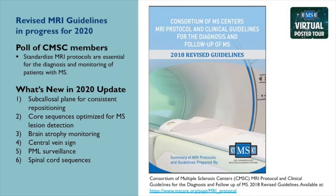Prior to this update of the guidelines, CMSC members were polled for their input. We got some really good suggestions. One was the interest around brain atrophy measurements — there's growing interest in wanting more quantitative information from MRI scans to measure more than just inflammation. One hurdle with the guidelines is getting people to adopt a very simple sequence that is ideal for doing brain volumetrics over time — a 3D T1-weighted image that takes less than five minutes but is ideal for measuring brain volumetrics.